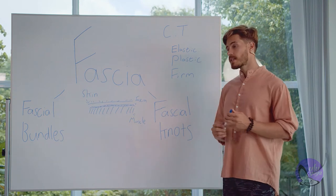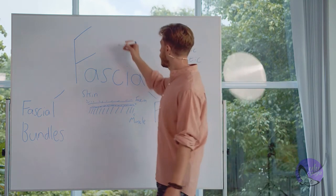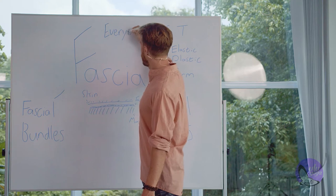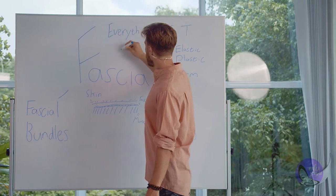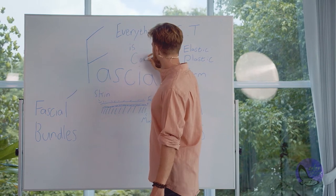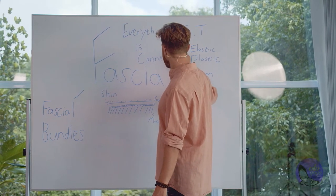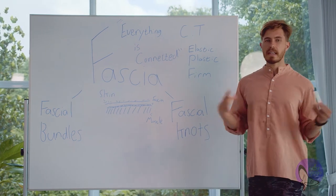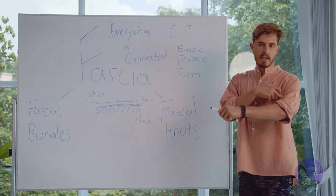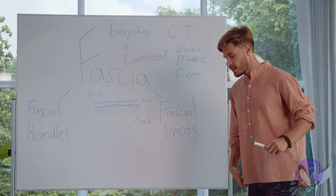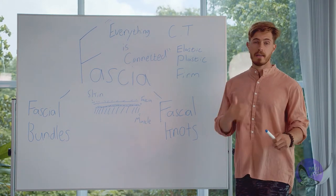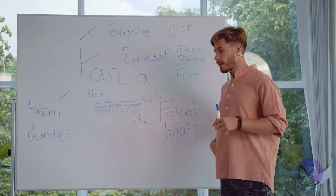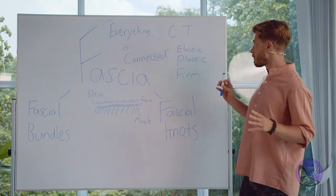The biggest takeaway from fascia — I'll even write it down — is that everything is connected. Fascia connects through everything in your body, and this fascial connection brings everything together. So if I press here, it's going to affect somewhere else. If I have a bundle here, it can affect my movements in other places. To show you how much a bundling at one point can affect you somewhere else, I'm going to do a little demonstration now.